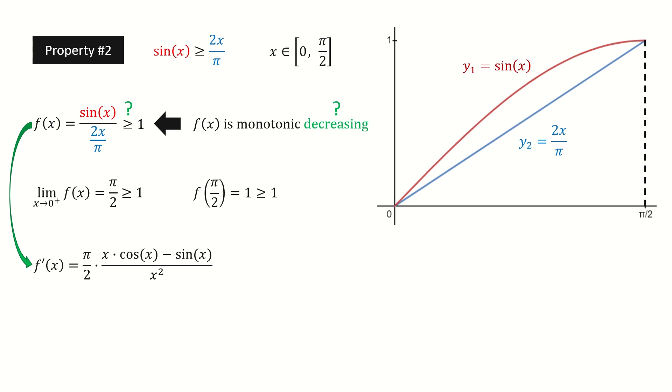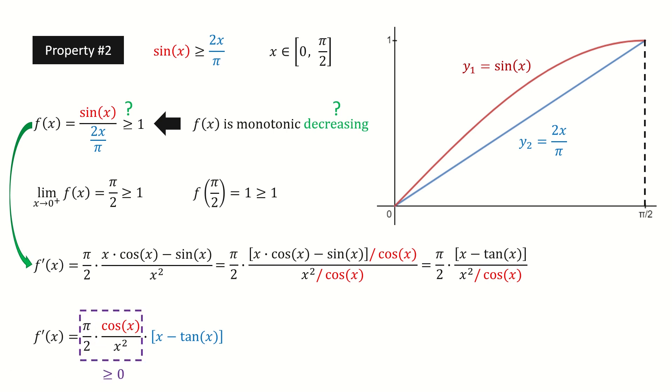So we take the derivative. And then we divide cosine x on both numerator and denominator. After dividing by cosine x, the numerator goes to here. Then we flip the cosine x to the top. So this term is non-negative. And recall the inequality for x and tangent x on this interval. So this blue term is less than or equal to 0. So the derivative is less than or equal to 0. Therefore, the function f is monotonic decreasing, and we can remove the question mark. So we are done for property number 2.